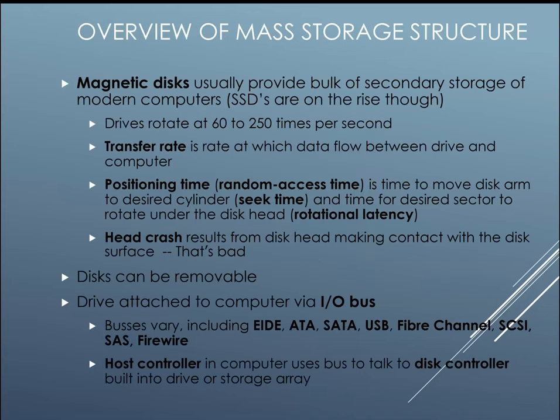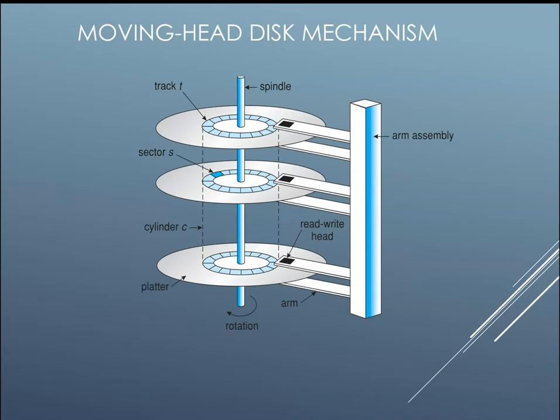Here's a visual. Basically we can see a track, a spindle, our arm, a sector, a collection of sectors, our selection of tracks called a cylinder, and our actual platter.